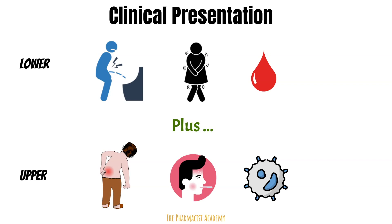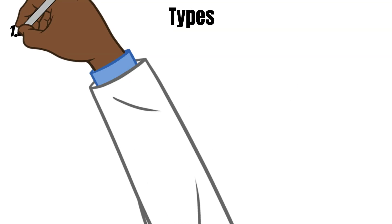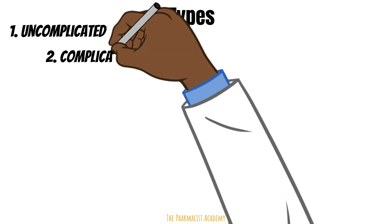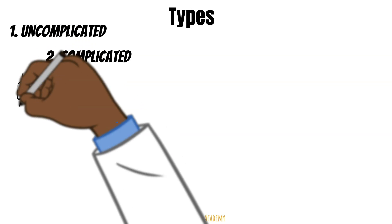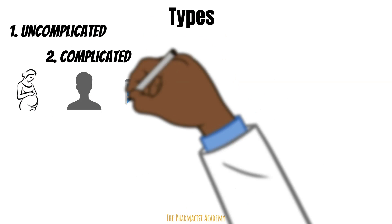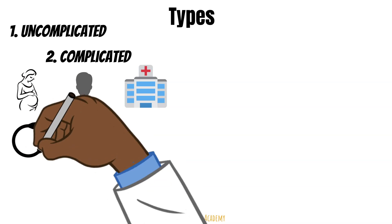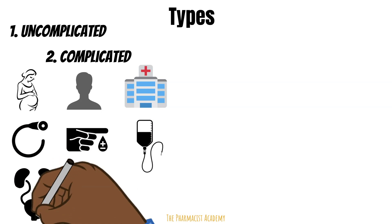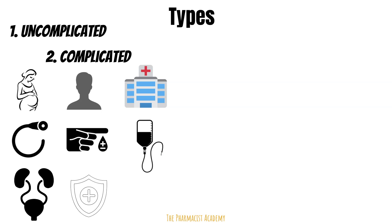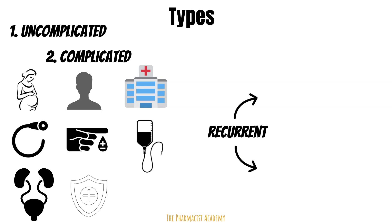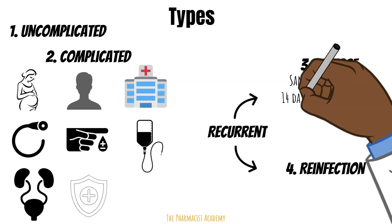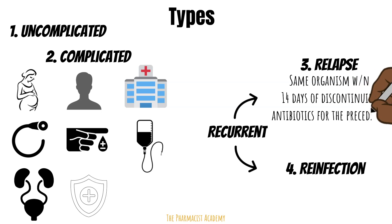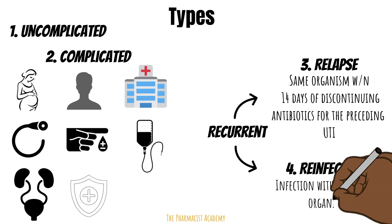UTIs also have four subcategories beyond location. The first is uncomplicated UTIs, and the second is complicated UTIs, which apply to pregnant women, men, patients who develop UTI while in the hospital, recent urinary tract instrumentation, uncontrolled diabetes, recent antibiotic use, urinary tract abnormalities, or being immunosuppressed. After a first UTI episode, 27% of women have confirmed recurrence within six months. Recurrence is divided into relapse — same organism within 14 days of discontinuing antibiotics — and reinfection, which is infection with a different organism.